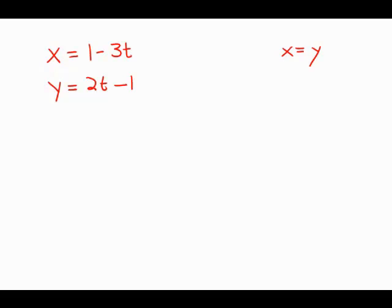If x equals 1 minus 3t and y equals 2t minus 1, then for what value of t does x equal y?